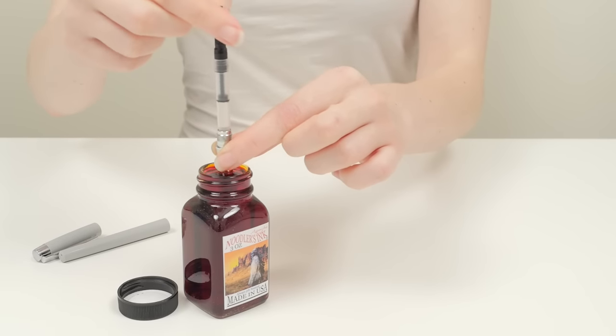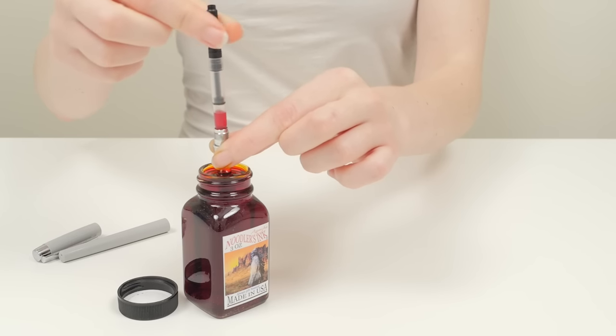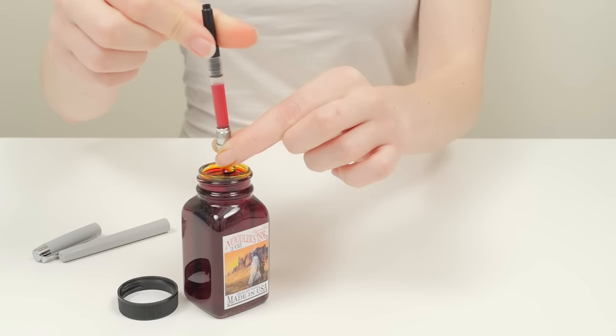You should notice air bubbles escaping from the pen as you do this. Twist the knob clockwise to raise the piston and draw ink into the pen. Repeat until the converter is full.